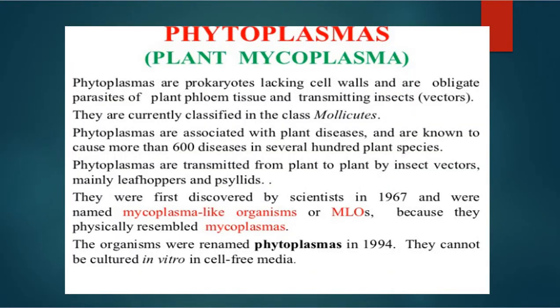Phytoplasma, also known as plant mycoplasma, are prokaryotes lacking a cell wall. They are obligate parasites of plant phloem tissue and are transmitted by insect vectors. They are currently classified in the class Mollicutes. Phytoplasma are associated with plant diseases and are known to cause more than 600 diseases in several hundred plant species. They are transmitted from plant to plant by insect vectors, mainly leafhoppers. They were first discovered in 1967 and were named mycoplasma-like organisms, or MLOs, because they physically resembled mycoplasma. They were renamed phytoplasma in 1994 and cannot be cultured in vitro in cell-free medium.